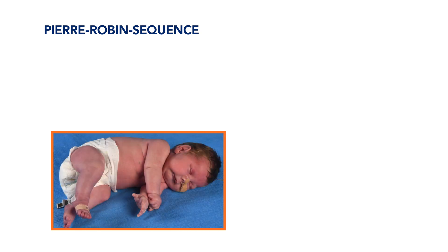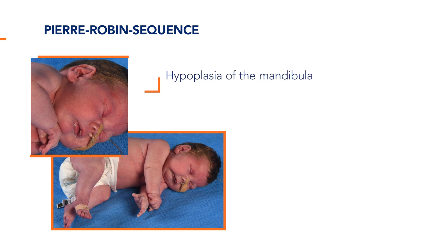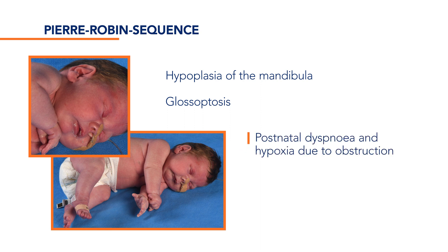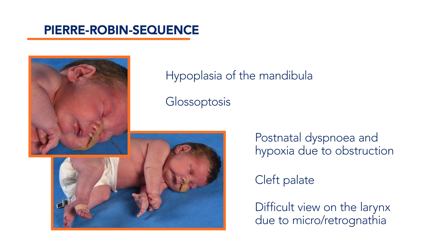The Pierre-Robin sequence, also called Robin sequence, is characterised by a triad of hypoplasia of the mandible, glossoptosis and difficulty breathing, sometimes leading to airway obstruction and hypoxia. It is often but not always accompanied by a cleft palate. Pierre-Robin sequence is associated with a difficult airway and especially with difficult visualisation of the laryngeal inlet on direct laryngoscopy. A Cormack-Lehane score of 4 is no exception in these children. These children can often be managed quite well with a laryngeal mask.